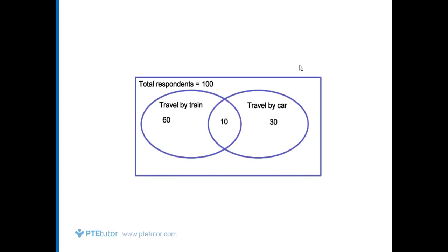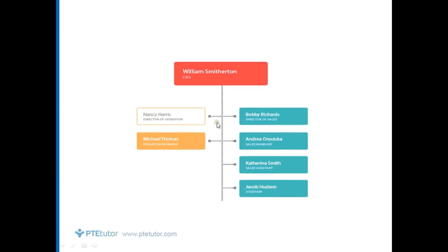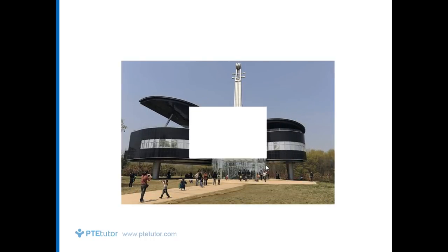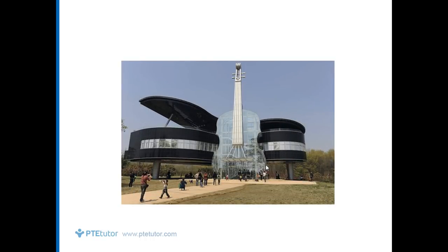Next one could be a Venn diagram — you can see circles intersecting each other, which indicates the Venn diagram. The next type could be a flow chart, also known as a tree diagram, which includes separate steps or stages. Next one could be a picture — as clearly seen, it's a clicked picture.